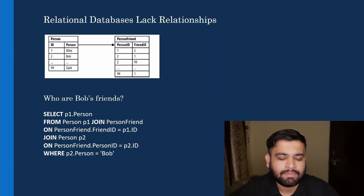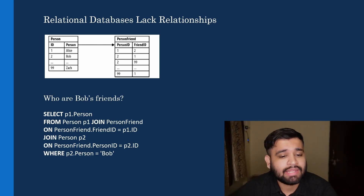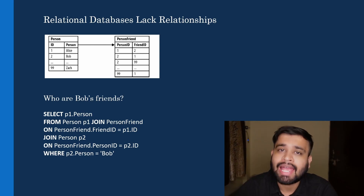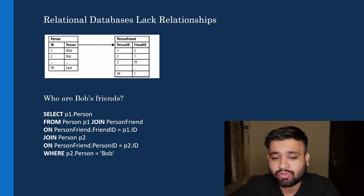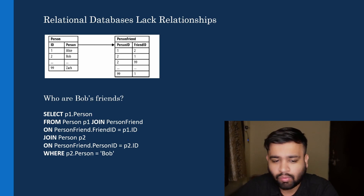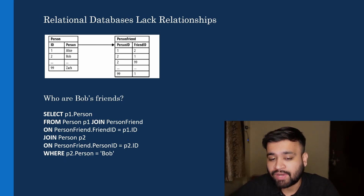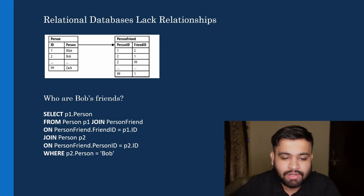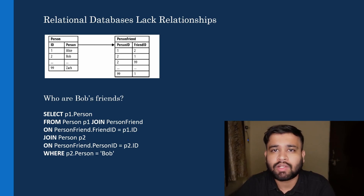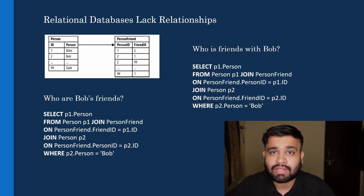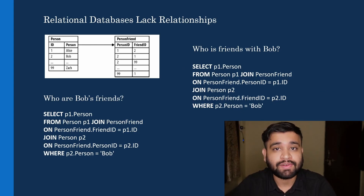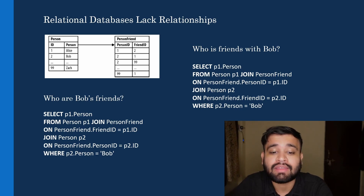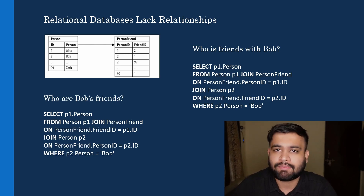We have two tables: a person detail table with person ID and name, and a person-friend table with friendship information. From this we know that ID 2, Bob, has two friends — ID 1 Alice and ID 99 Zach. Answering 'who are Bob's friends?' is a simple SQL query and not expensive on this dataset.